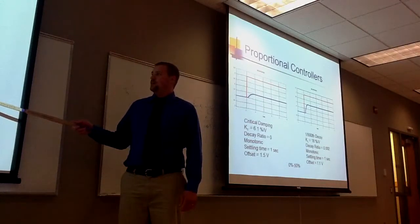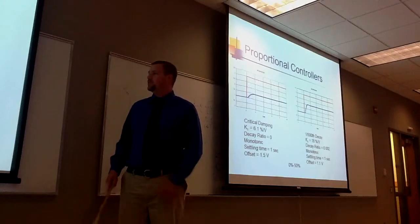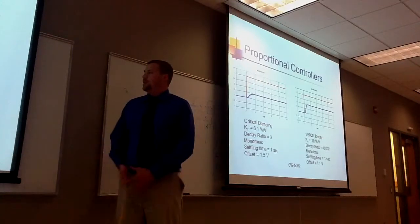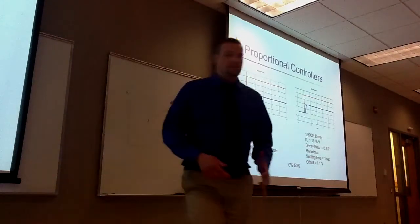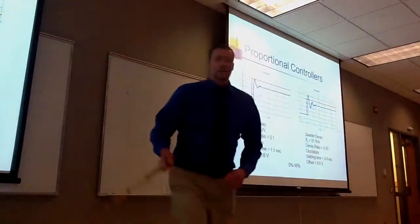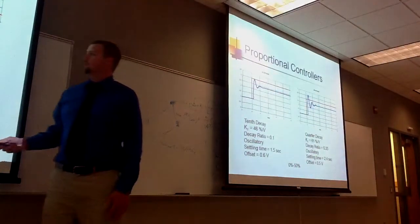My KC value is 18% per volts. It took, once again, about a second to settle. And with an offset of 1.1 volts. Staying with the same region, 0 to 50%.